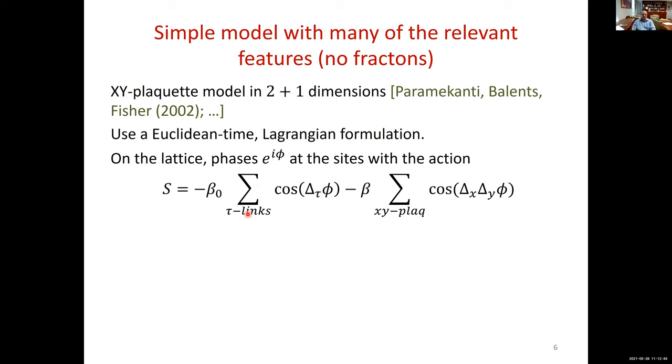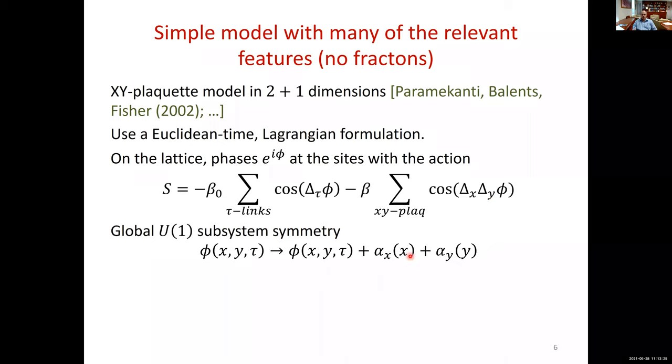First of all, instead of using the Hamiltonian formulation, we found it easier to use a Euclidean-Lagrangian formulation. So we have lattice also in the time direction. This is the model on the lattice. It's very reminiscent of the ordinary XY model. The difference is that in the ordinary XY model these terms are on the links, and here these are terms on the plaquettes. This is the term in the time direction that is the same as in the ordinary XY model. If we take a continuum limit of the time direction, then this cosine will become the second derivative with respect to time of phi. And if we go to Hamiltonian formulation, this term will be replaced by the momentum conjugate to phi squared.